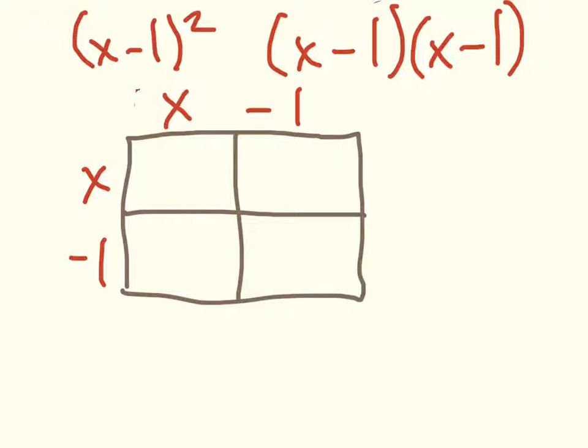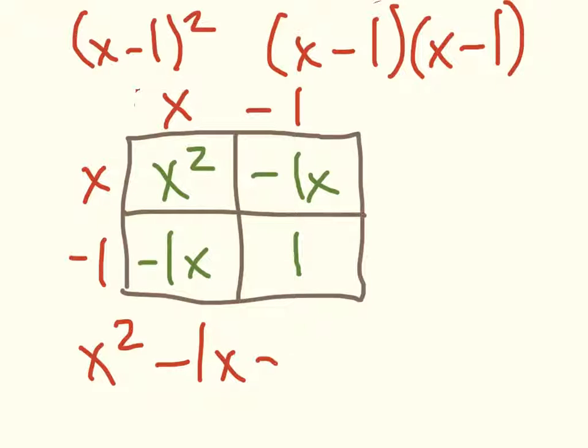x times x is x squared. x times negative 1 is a negative 1x. x times negative 1 is a negative 1x. And negative 1 times negative 1 is positive 1. I can bring everything down. x squared minus 1x, because that was a negative in there, minus 1x, minus 1. I can combine my like terms here and here. And I come out with x squared minus 2x minus 1.